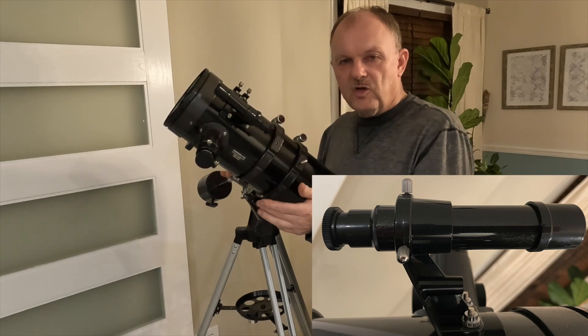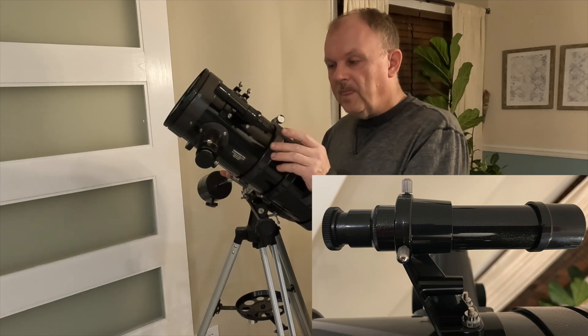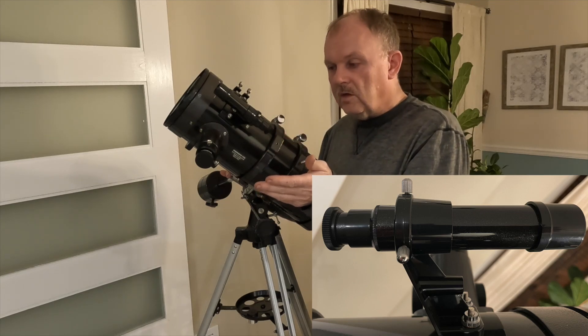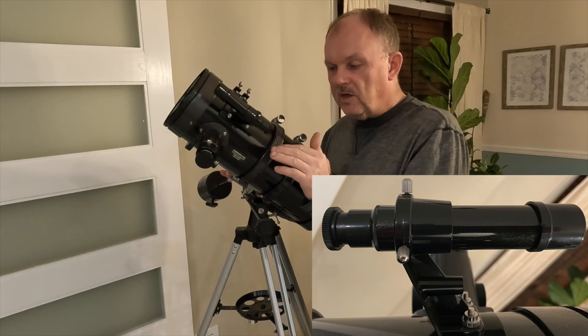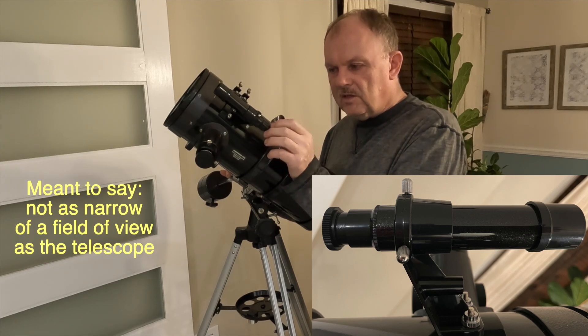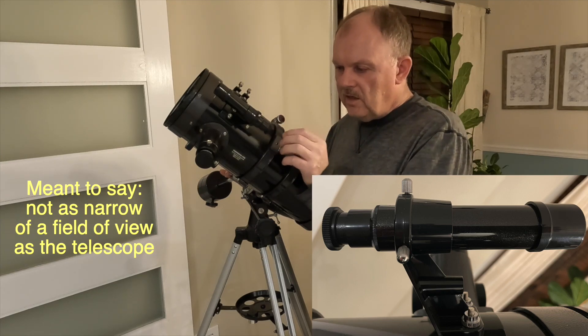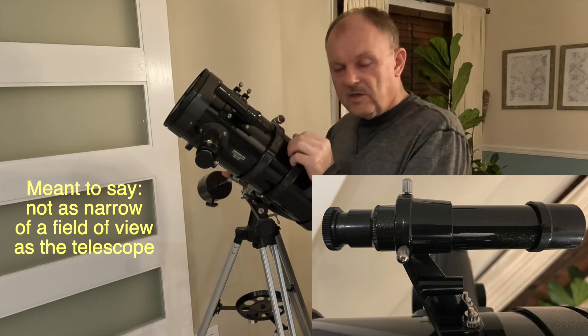The idea with the finder scope is you're trying to initially locate objects like Saturn or Jupiter in the finder scope because it's not as focused a view as the telescope itself. And this needs to be aligned with your telescope.